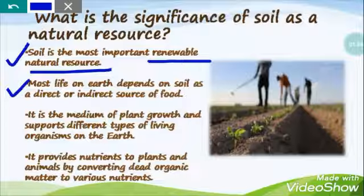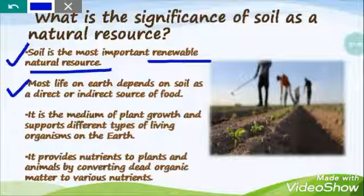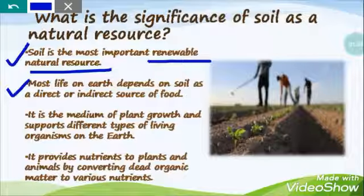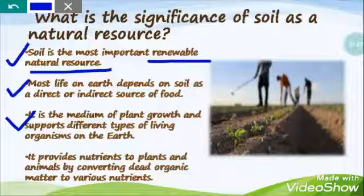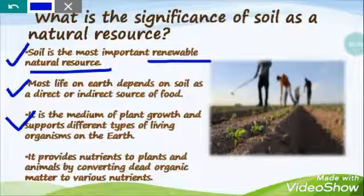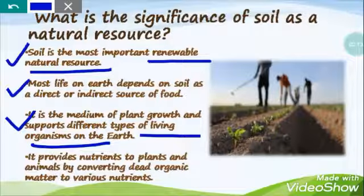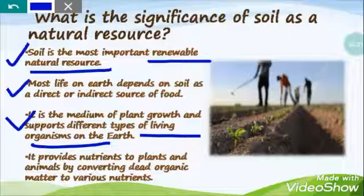Number two: most life on earth — animals, plants, birds — depends on soil as a direct or indirect source of food. Number three: soil is the medium of plant growth. We know that each and every plant grows on soil, and it also supports different types of living organisms, like earthworms and burrowing animals like rats, whose main habitat belongs to the soil.